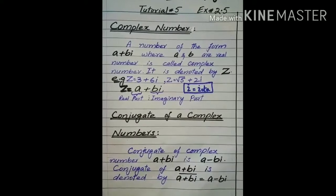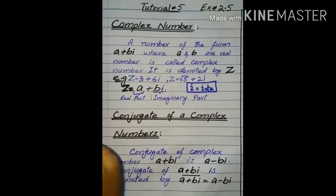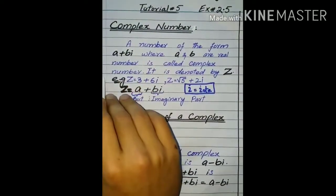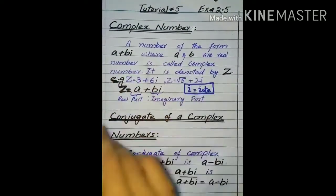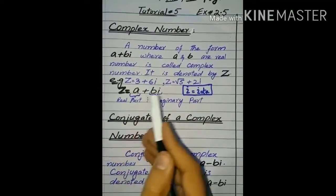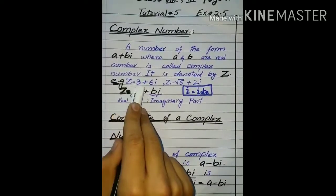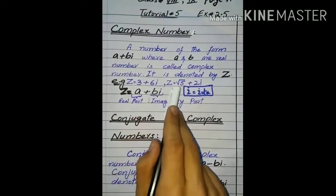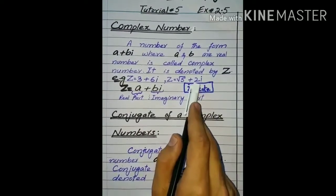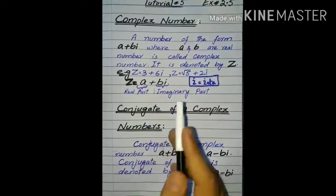Complex number — what is a complex number? A number of the form a plus b iota is called a complex number, where a and b are real numbers. We always represent a complex number with capital Z. So for example, Z equals 3 plus 6 iota, and root 5 plus 2 iota — both of these are complex numbers.